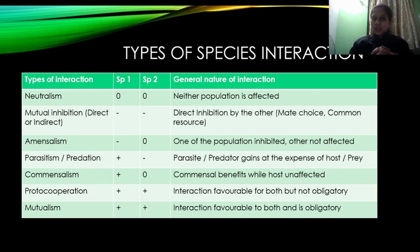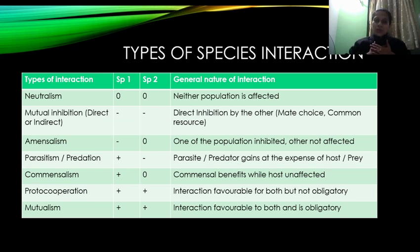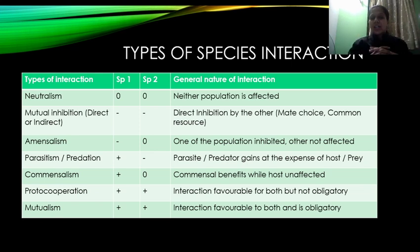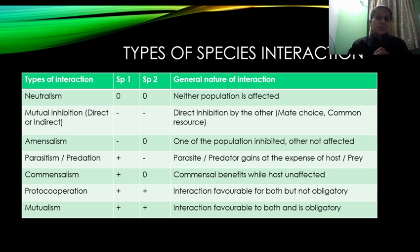इसके बाद जो interaction हम देखेंगे that is mutual inhibition। Mutual inhibition मतलब मुझे भी नुकसान है, तुझे भी नुकसान है। Species 1 is also getting negatively affected and species 2 is also getting negatively affected। अब ये जो affect होता है ये या तो directly हो सकता है या indirectly। Direct inhibition — जैसे mate choice में, मुझे एक potential partner के साथ mate करना है और I am trying to win over that mate।